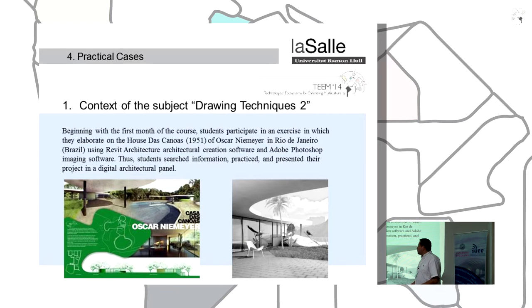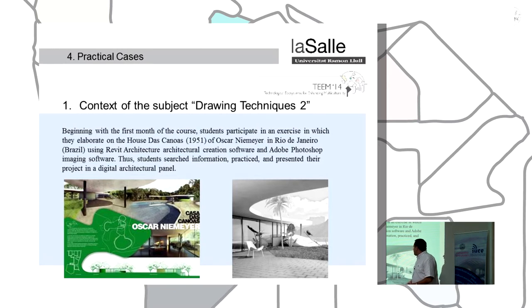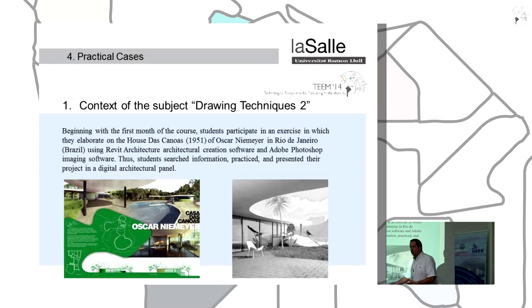The second step, using 3D Max, they need to apply illumination and texturize the building. After that, they use Photoshop to make a representation panel in tube size. Finally, with the model finalized, they begin to work with the virtual reality tasks and the gamification systems.